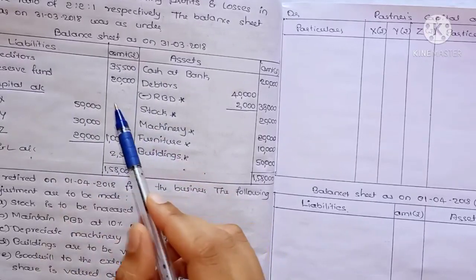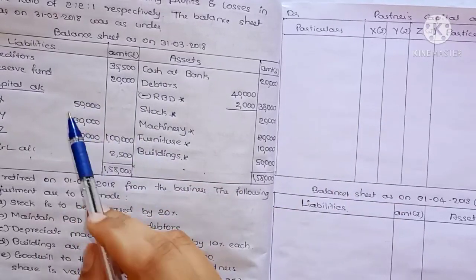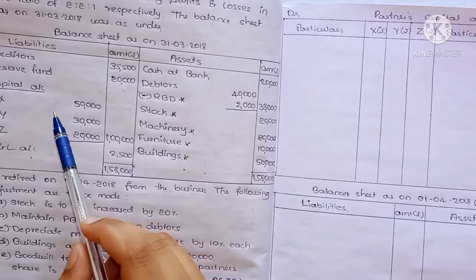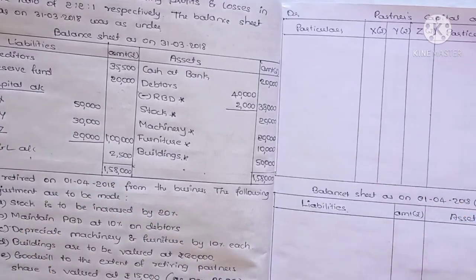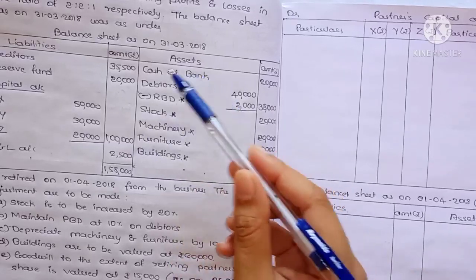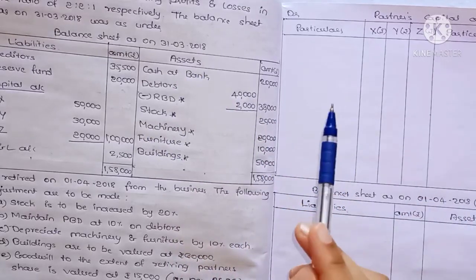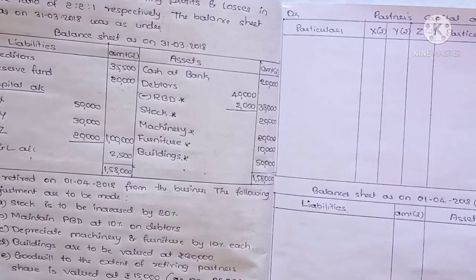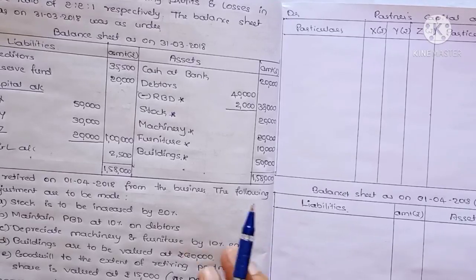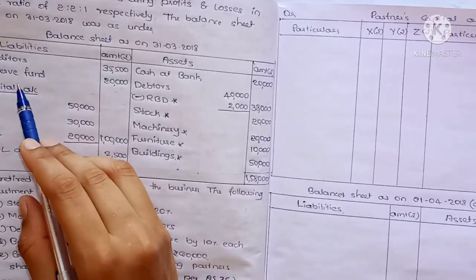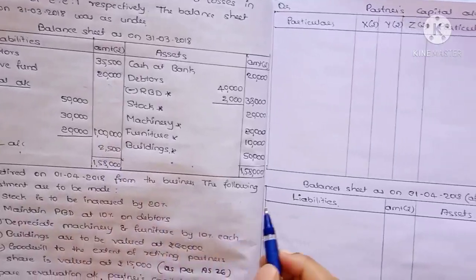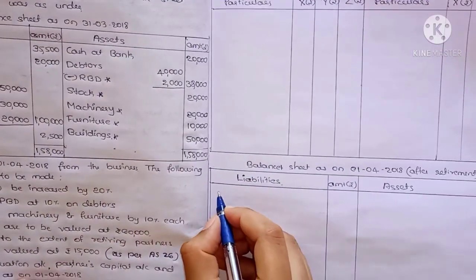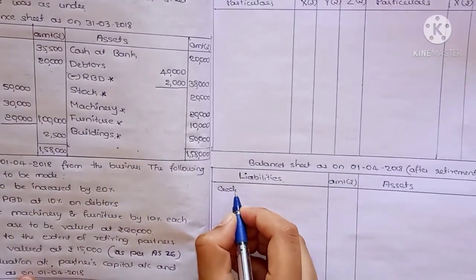We transfer balance sheet items one by one. The basic rule is: the liability side or credit side goes to the credit side of the partners' capital account, and the asset side or debit side goes to the debit side. First item: creditors — it is an outsider liability, goes to the liability side, and does not have any adjustment.